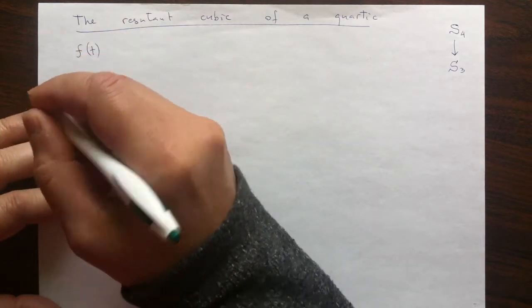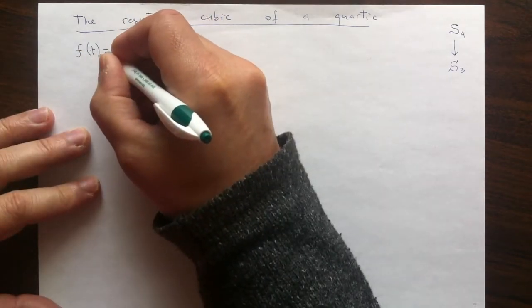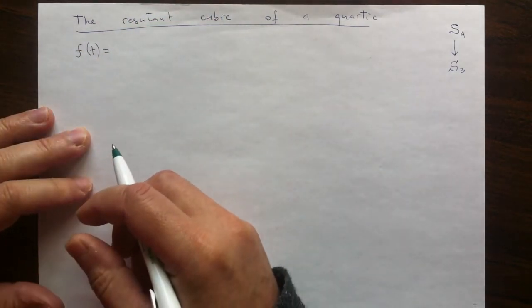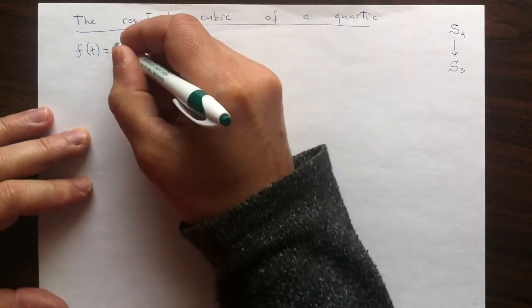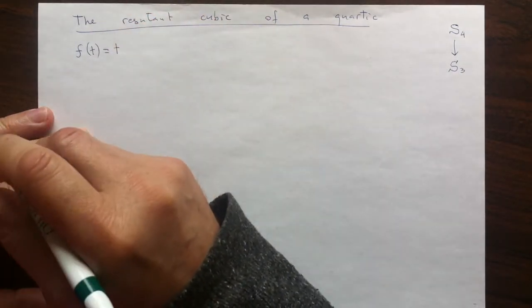As you will see, there are two constructions, but I will choose the one which is somewhat easier. So let me start with my input, with the quartic.